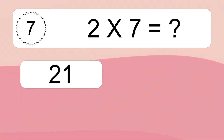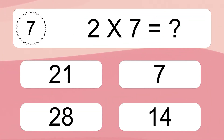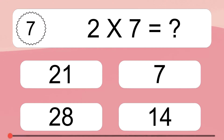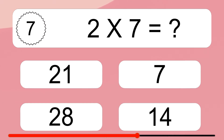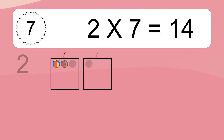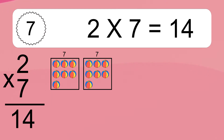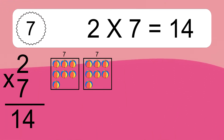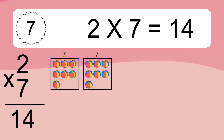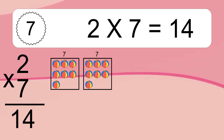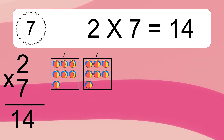2 times 7 equals what? 2 times 7 equals 14. We have 2 boxes and each box has 7 colorful balls inside. If you count all the balls in all the boxes together, you will have 2 times 7 balls. This equals 14 balls.